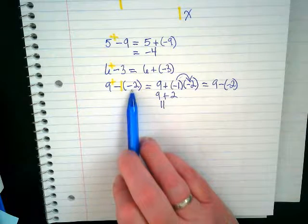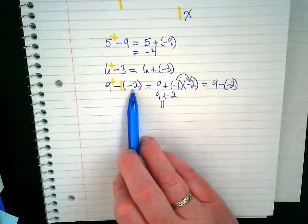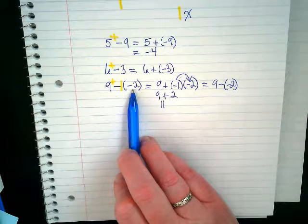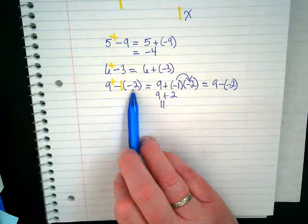It's always going to take the number inside and just turn it positive because we're multiplying it by a negative one. Does the number change if we're multiplying it by one? No.